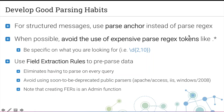Develop good parsing habits: whenever possible, if you have a structured message, use parse anchor instead of parse regex — it's easier to build and performs much better. When using parse regex, avoid expensive tokens like dot-star; be as specific as possible — if you're looking for a digit between 2 and 10 characters, specify that. And whenever you can, use a field extraction rule — a rule that extracts fields at the time data is ingested.